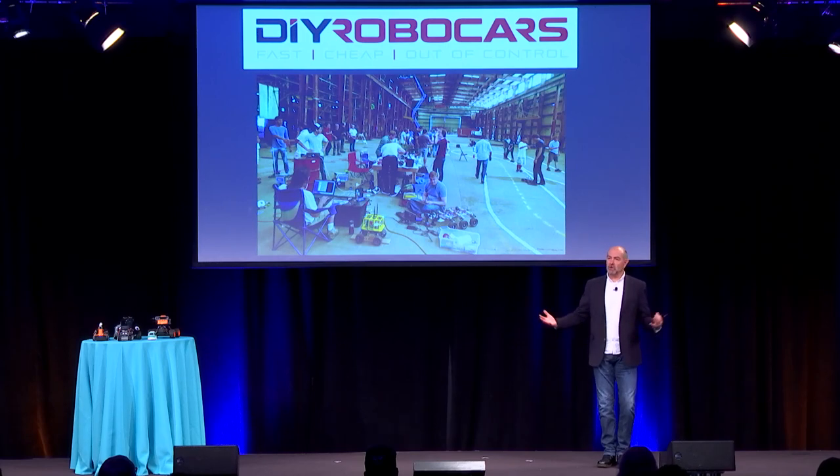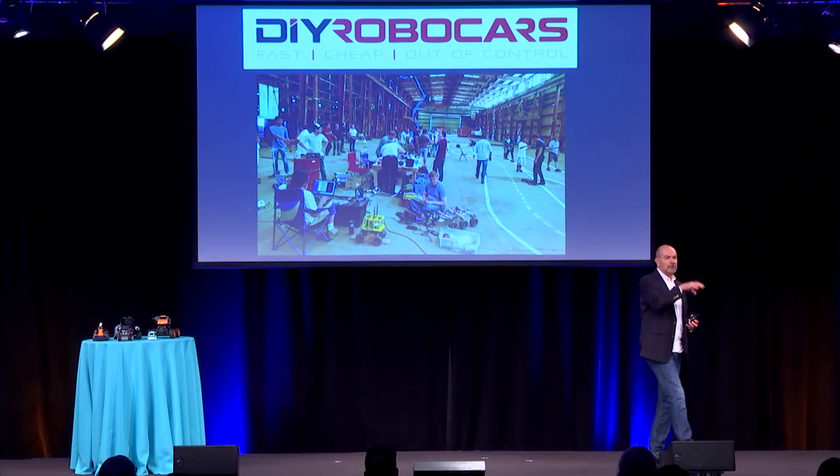We have about 10,000 participants around the world, 40 or 50 different regional areas. Every weekend somewhere in the world, people are taking these cars and racing them head to head, fully autonomous, to see how fast they can go and how well they can navigate. This weekend on Saturday in Oakland, we're having our quarterly race at Circuit Launch. Go to DIYRobocars.com and you'll see the link to the meetup. Last quarter we beat the fastest human. This time we've got a faster human, so we'll see how we do.